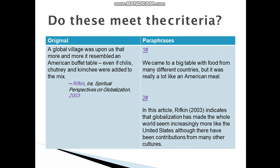Here also, I have another example. The original text reads: 'A global village was upon us, that more and more it resembled an American buffet table, even if chilies, chutney, and kimchi were added to the mix.' Here, the name of the writer, the name of the magazine or book, and the year of publication are provided. The first paraphrase: we came to a big table with food from many different countries, but it was really a lot like an American meal.